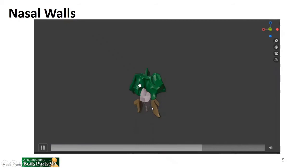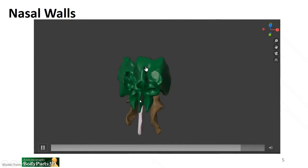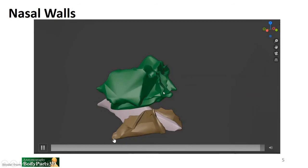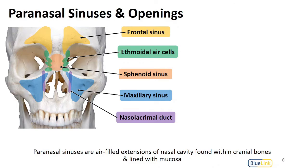If we remove the context, we can see again in green the ethmoid bone with the crista galli upward, the vomer at a more anterior portion, the cribriform plate, and the inferior nasal concha in brown. Surrounding the nasal cavity we find paranasal sinuses — spaces within the neighboring bones that are extensions of the nasal cavity.